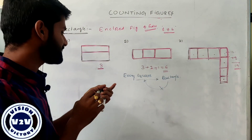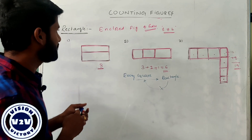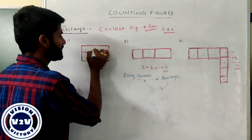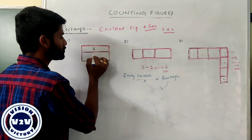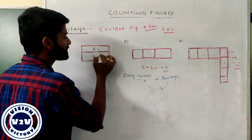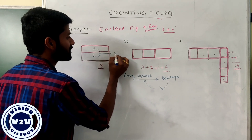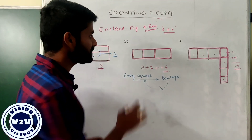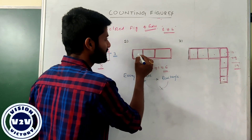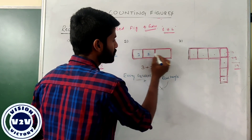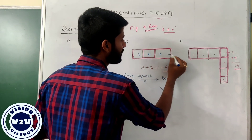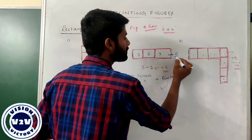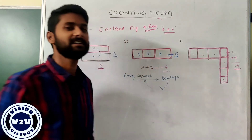We have an easy approach. If you count any rectangle, assign numbers: here one box, here two boxes — simply add them together. One plus two: the total number of rectangles are three. For this question, the same approach: one, two, three — one plus two plus three: if you add all the numbers, the total number of rectangles are six.